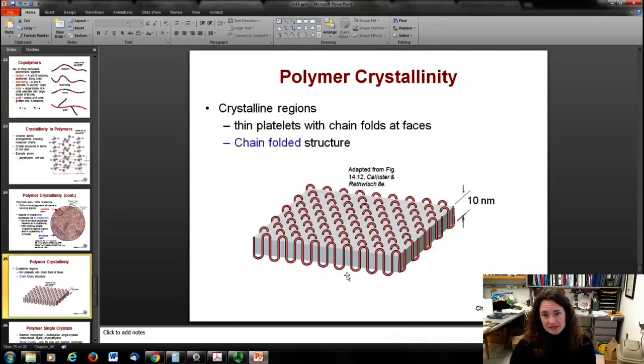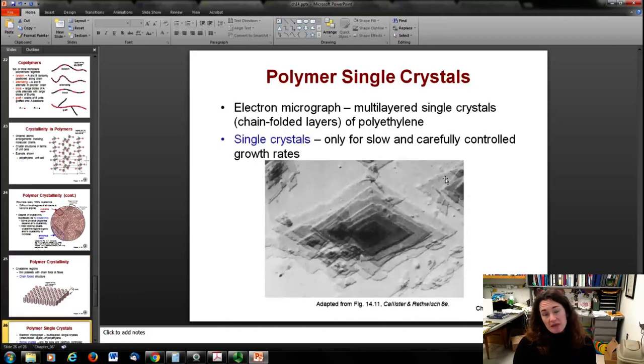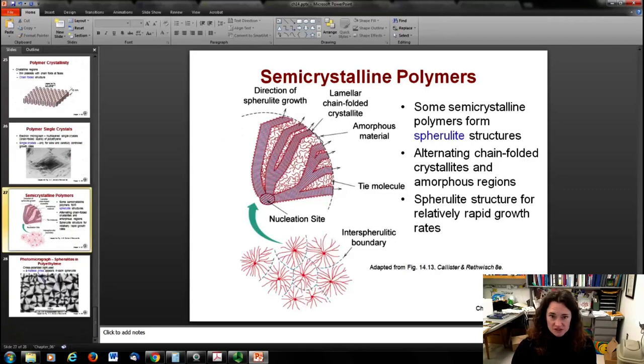When the crystallinity happens, it usually happens in these little thin platelets like you see, and that happens the chain kind of bends back and forth on itself, forming these regular arrays within the little platelet. This is the chain folded structure. Here's an electron micrograph of what these little platelets look like. This is for polyethylene, and this is actually a single crystal. This only happens if you're willing to put in the time, slow and carefully controlled growth rates. More common is a semi-crystalline polymer with these crystalline regions surrounded by the amorphous regions. Sometimes the growth of these things looks really cool, like these little spherulite growths here, where you have a nucleation site where it crystals and it crystallizes and it grows out from there in these little legs. It kind of looks like dandelion fluff when it does that. So that's common for some crystalline polymers.